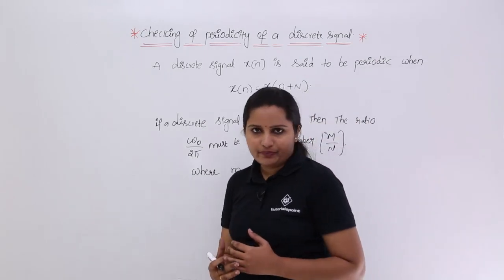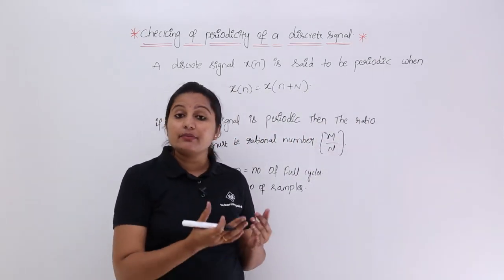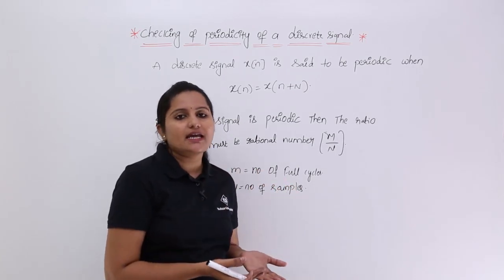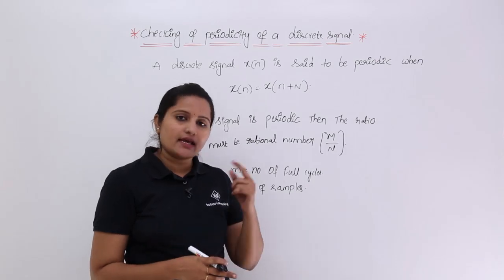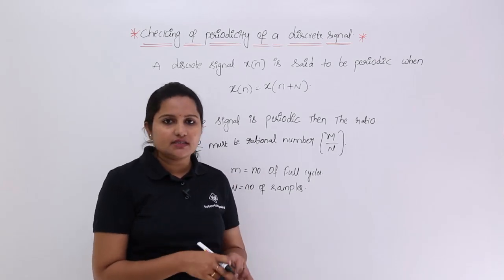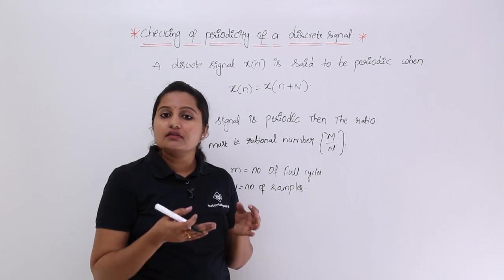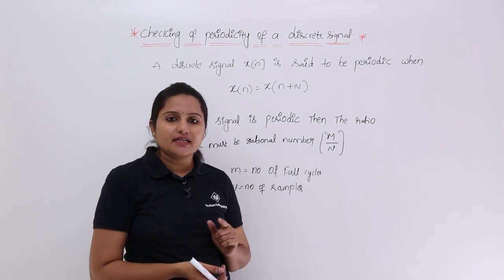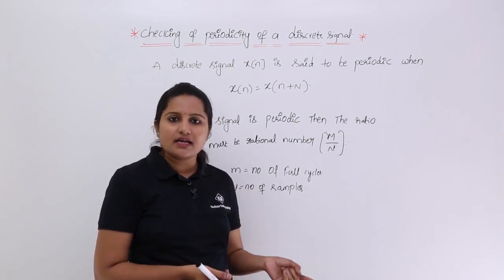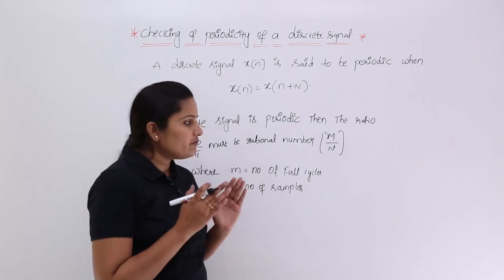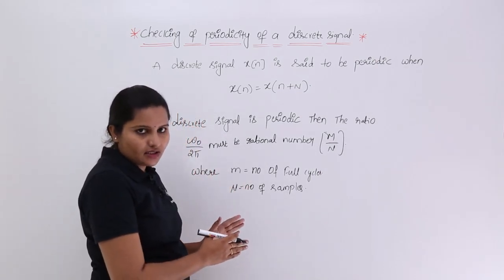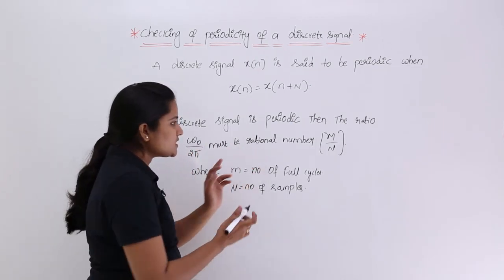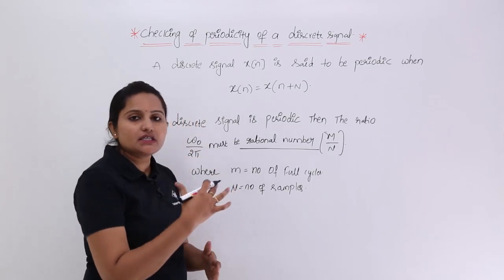Comparing discrete and continuous time periodicity checking: for a continuous time signal, we have two methods — the GCD method and the T1/T2 ratio of time periods method. For discrete signals, to check periodicity we use the equation ω₀/2π, and this must be a rational number, meaning an integer divided by an integer.